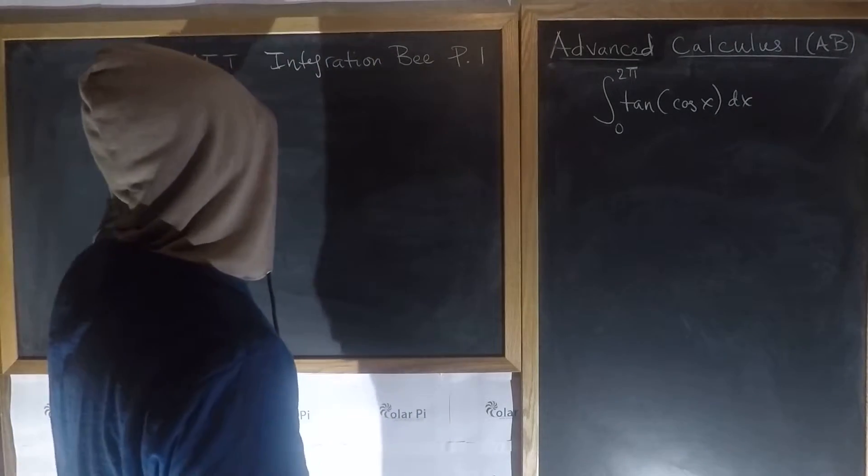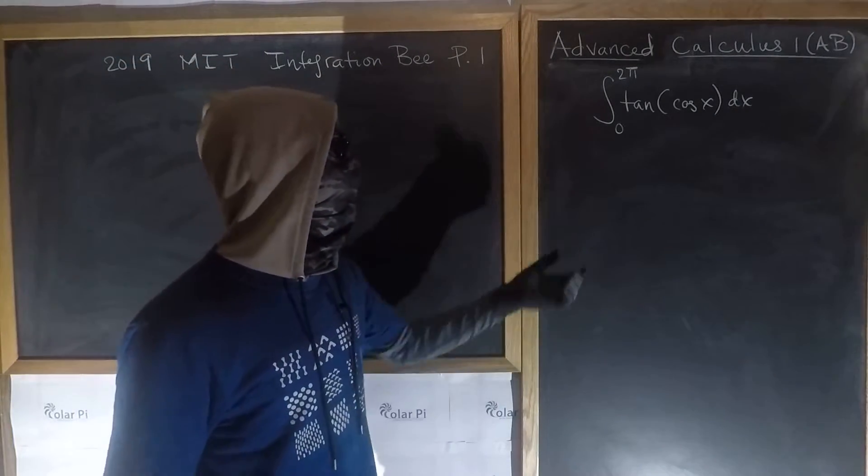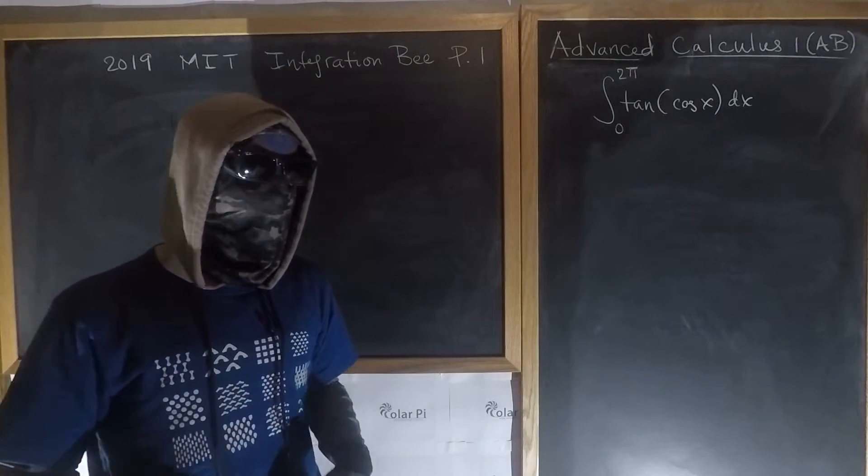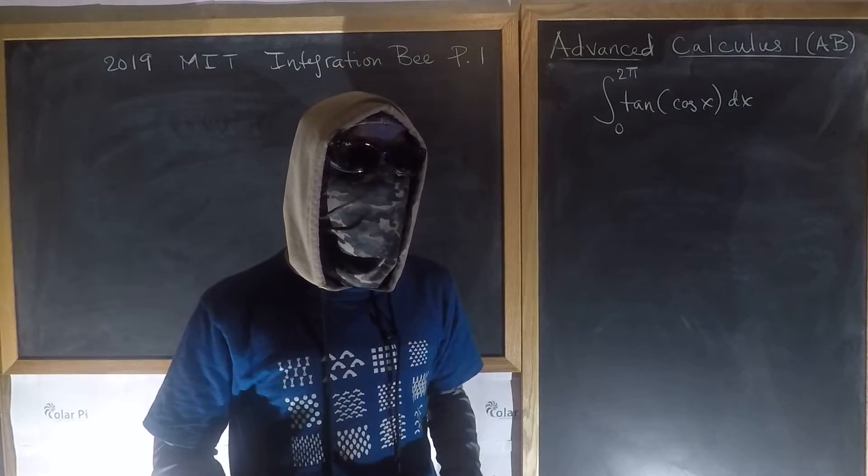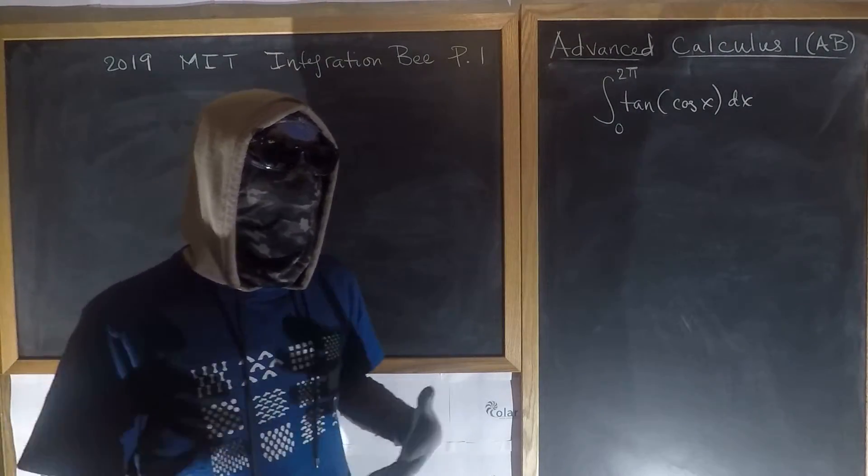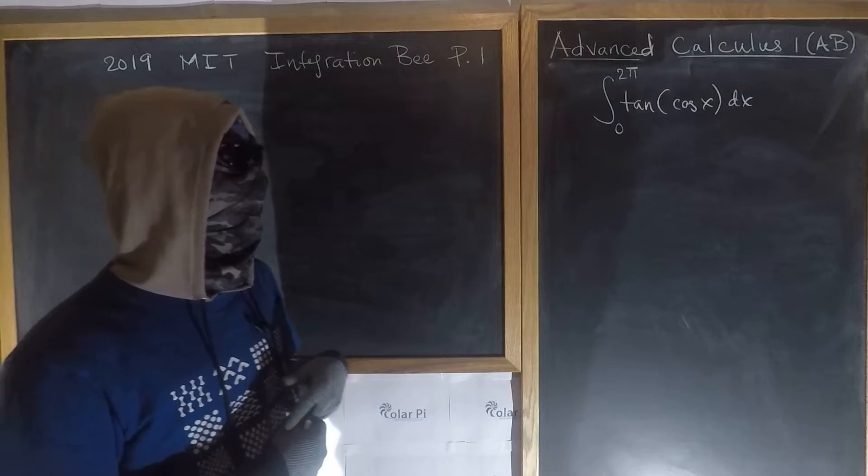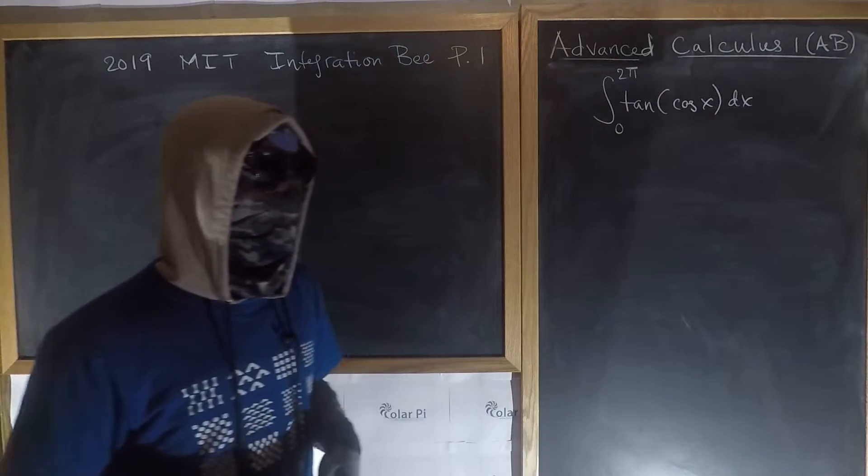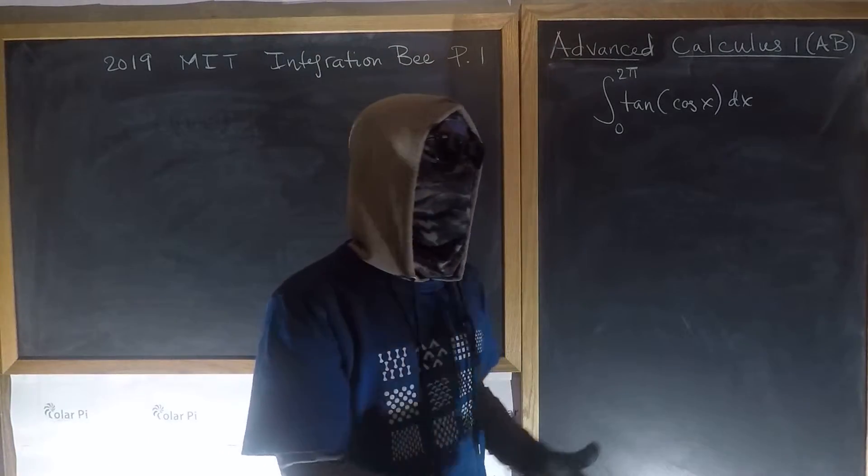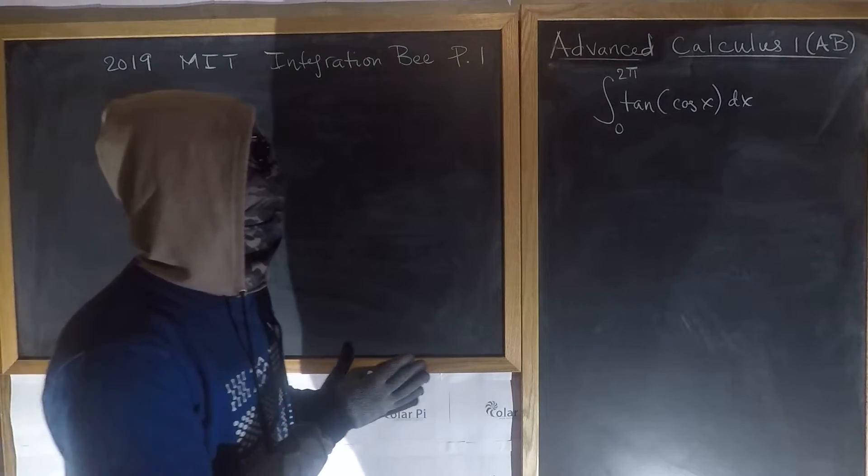So this is the first problem on the 2019 MIT Integration B, and this is not an elementary integral. But as with all integration problems, the first thing you should try to think is: can I do u-substitution? And there are strategies for picking your u when you're trying to do u-substitution, but I have videos dedicated to that, so I'm not going to talk about those strategies here.